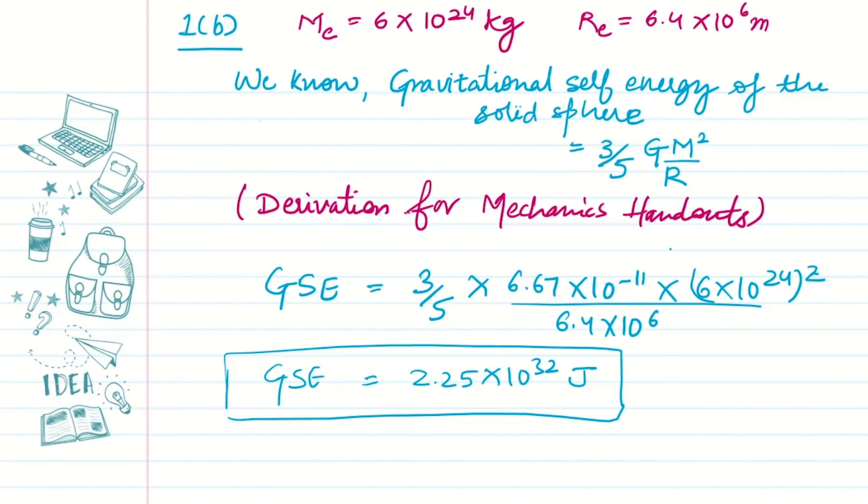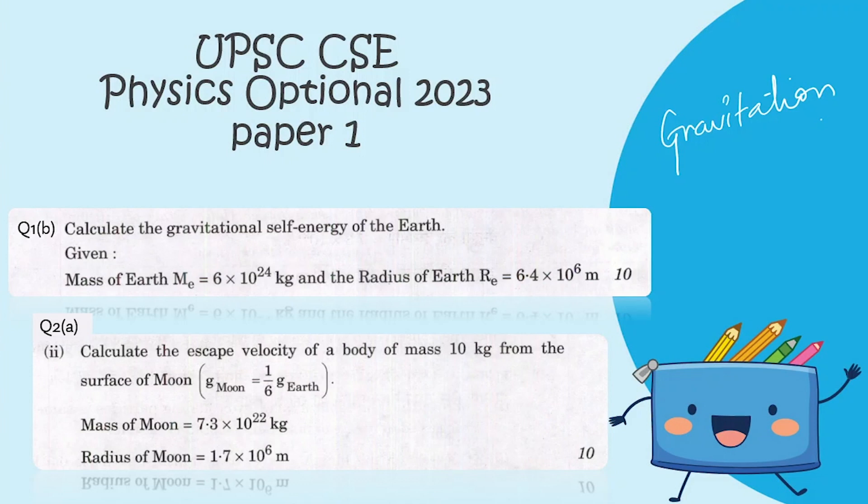So this is the solution for the first part. Let's move to the next part. In the next part, we have to calculate the escape velocity of a body of mass 10 kg from the surface of the Moon. We are given the relation between acceleration due to gravity for Moon and Earth, and we are given the mass and radius of the Moon.